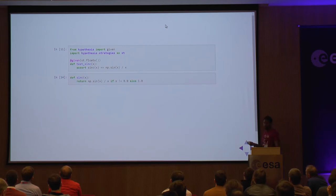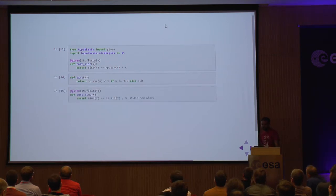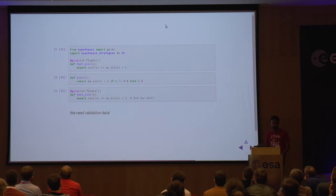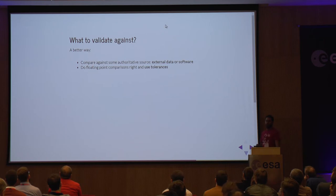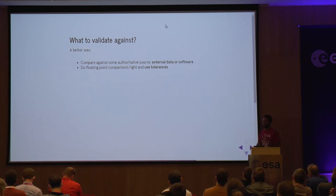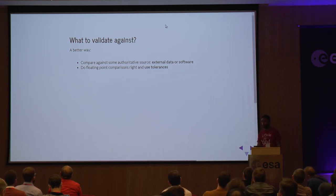Once you fix the function — because with x equals zero the result should be 1.0 — what do we do with the test? We can't copy-paste the formula again. We could handle special cases like infinity individually, but there are better ways. We need validation data. To avoid typo errors from copy-pasting, we should validate against some external source of data we don't control — tabulated values, or a paper that performs our experiment in controlled conditions — and we must do floating-point comparisons correctly to avoid tolerance errors.